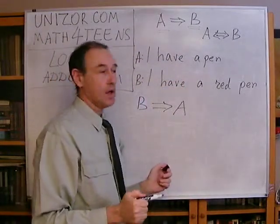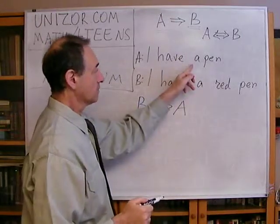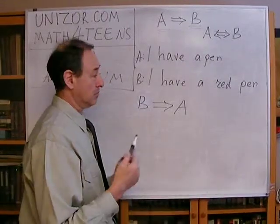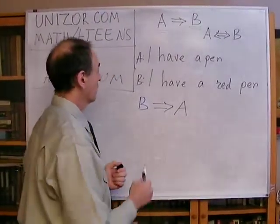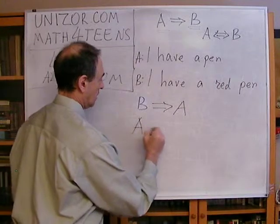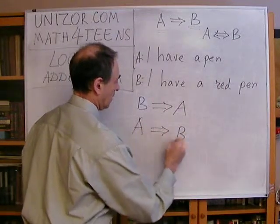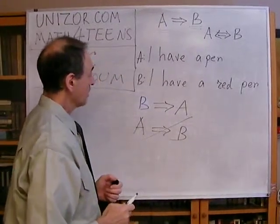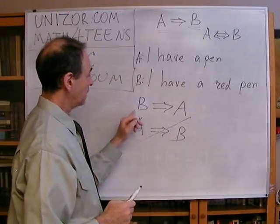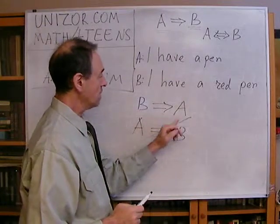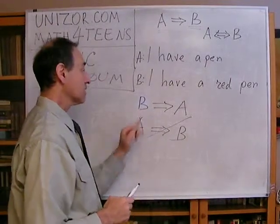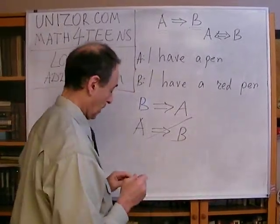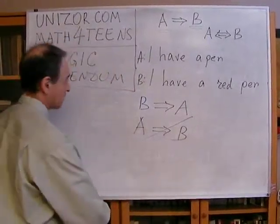Is A a sufficient condition for B? The answer is no. Because if I have a pen, it doesn't really mean that I have a red pen — it might mean I have a black one. So A does not imply B. In this particular case, B is a sufficient condition for A, and A is a necessary condition for B. The reverse is not true. Let me give another example.